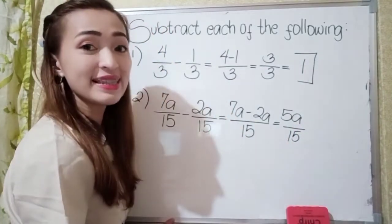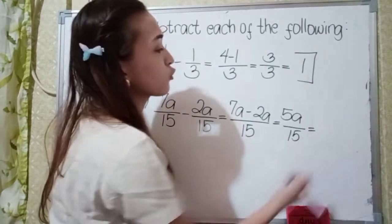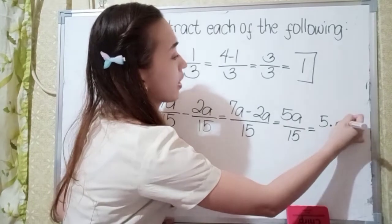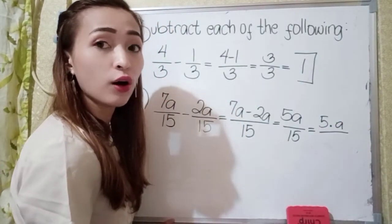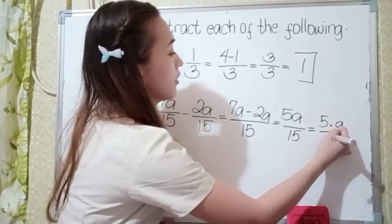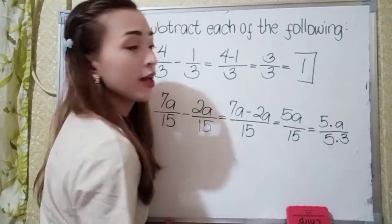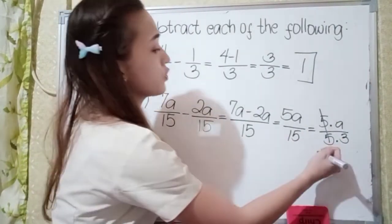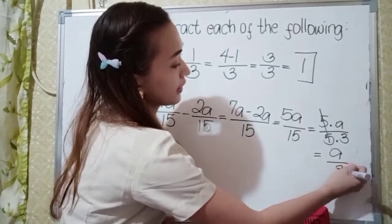Now we can simplify 5a over 15. So what are the factors of 5a? So we have 5 times a. And then our denominator, what are the factors of 15? We have 5 times 3. Since 5 divided by 5 is 1, so that is cancelled. So our final answer in number 2 is a over 3.